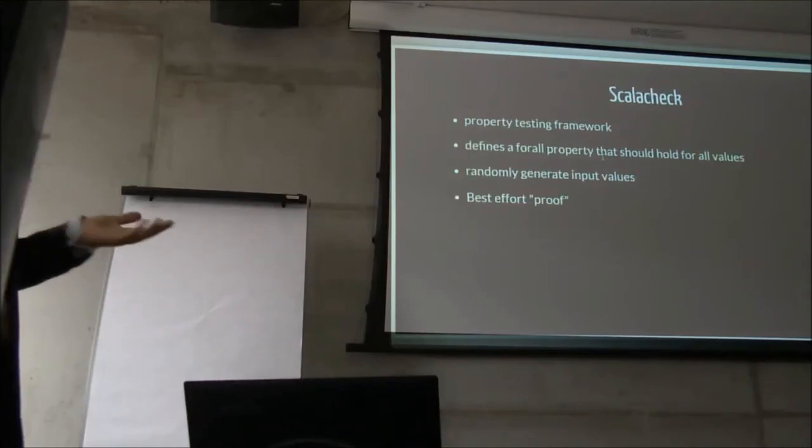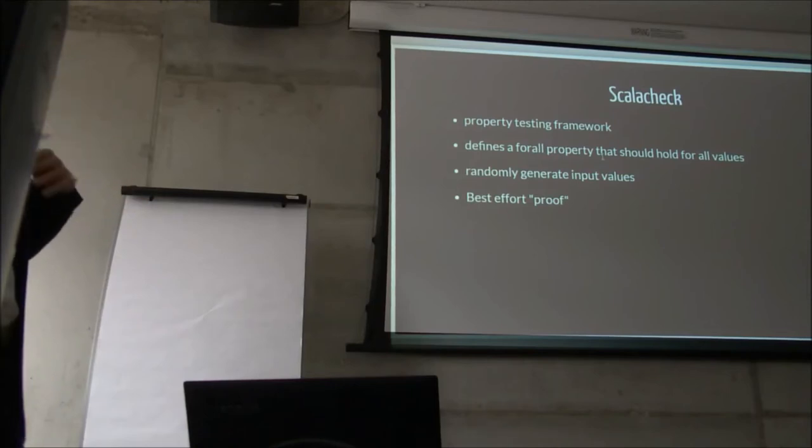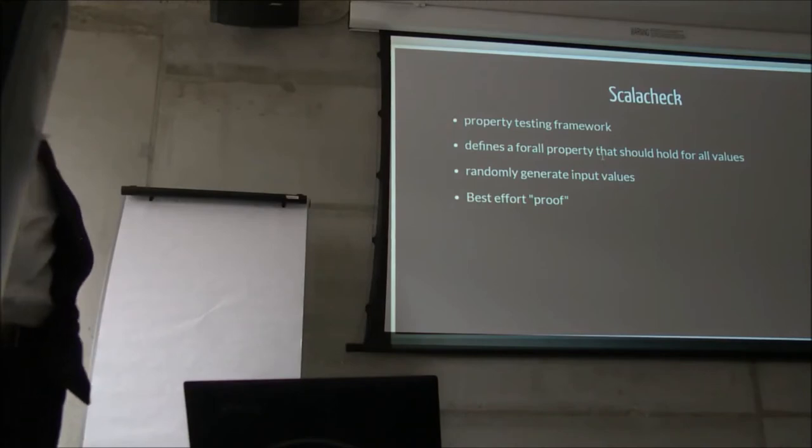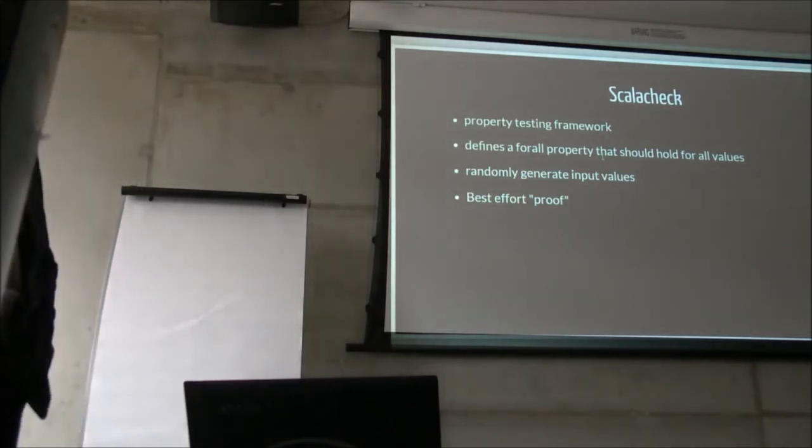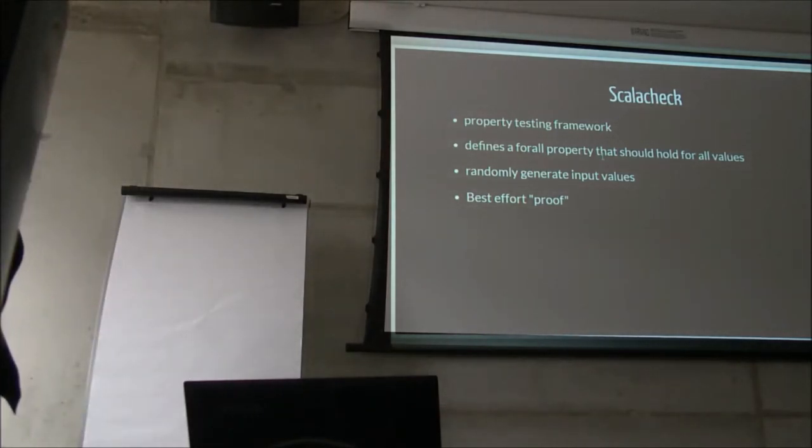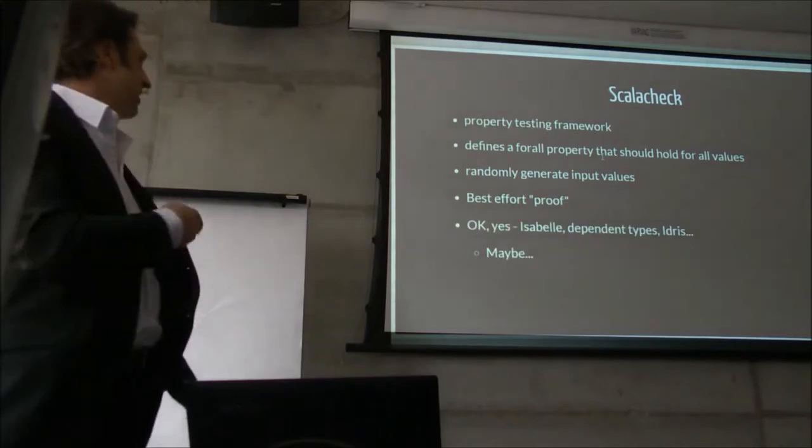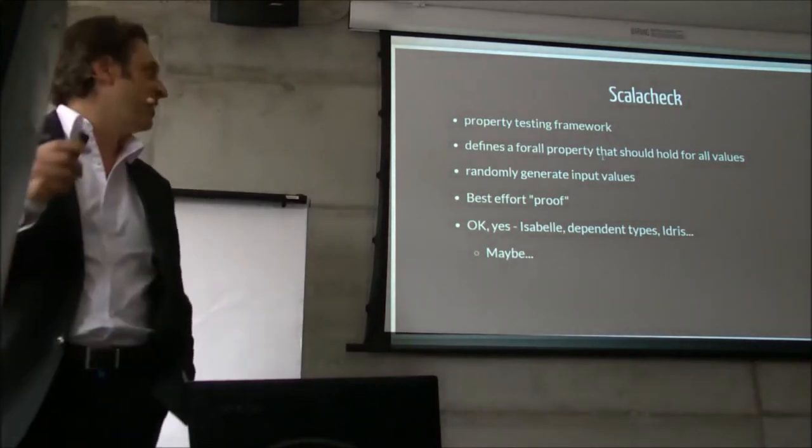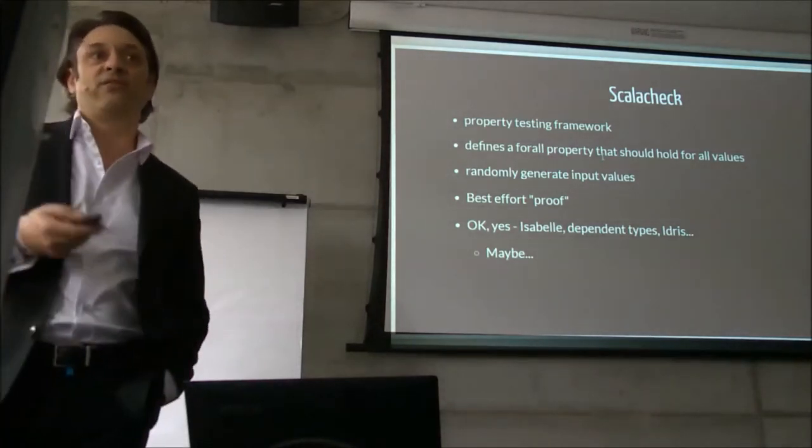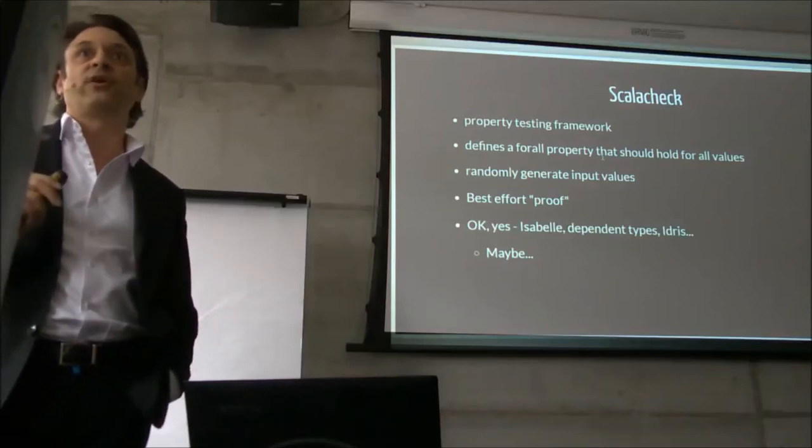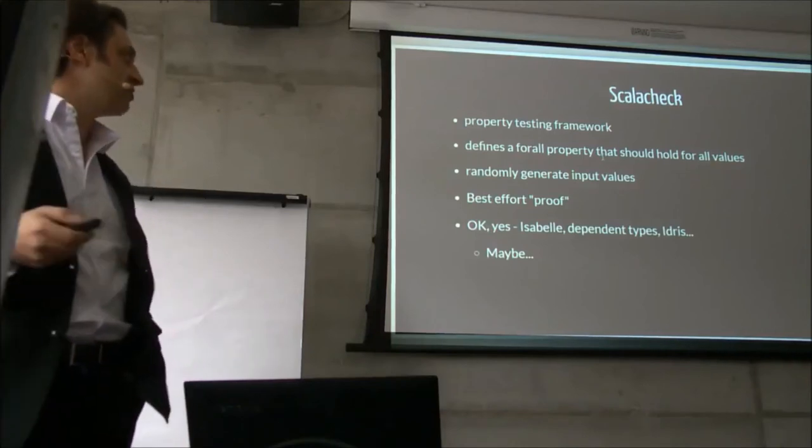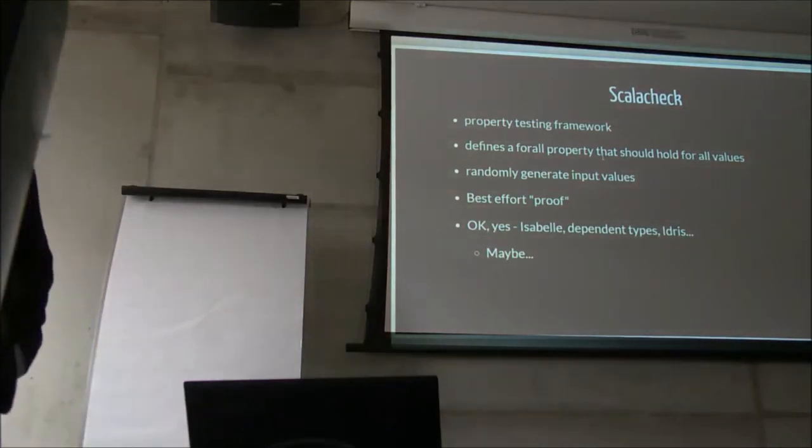So how do we test these things? ScalaCheck, I'm sure you're already aware of, it's a property testing framework that we can randomly generate some values to perceive if they hold for all values. We've got Isabelle that Lars is good at, we've got dependent types, Idris, maybe one day, but for the time being we can't use any special proofs. We can only mimic a proof by trying to make it fail using ScalaCheck with random values. But it's not bad, it's still pretty good.